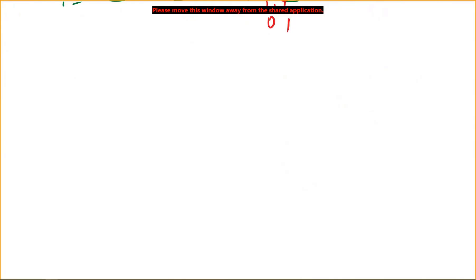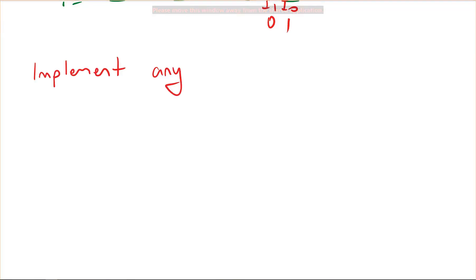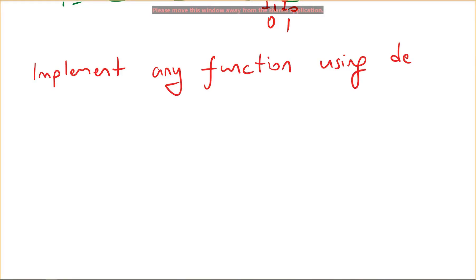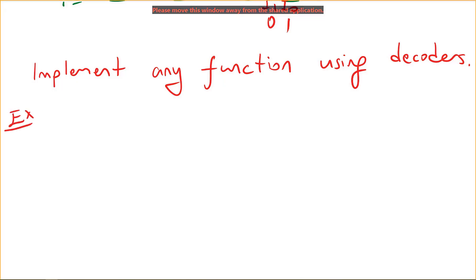Another functionality of decoders is to use them to implement any function. Just like we use multiplexers to implement any functions, we can also use decoders with some additional gates to implement any function. Let's do some examples to see how this is done.